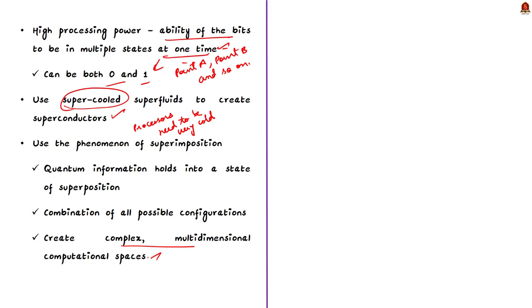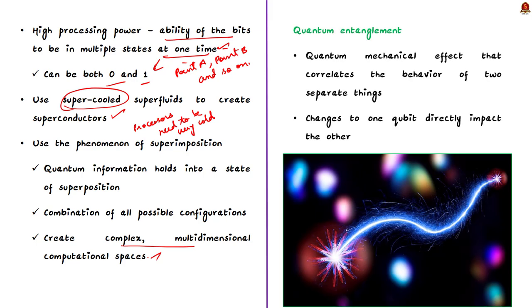Quantum computers use one more phenomenon, which is called quantum entanglement. Entanglement is a quantum mechanical effect that correlates the behavior of two separate things. When two qubits are entangled, changes to one qubit directly impact the other. Quantum algorithms leverage these relationships to find solutions to complex problems. Now let's see how it is different from conventional computing.